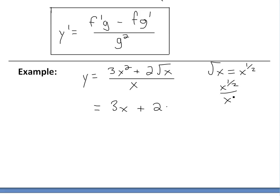Basically, x can be written as x to the power of one, or two over two to get a common denominator. Then you subtract: one-half minus two over two gives x to the power of negative one-half, which is the same as one divided by square root of x.